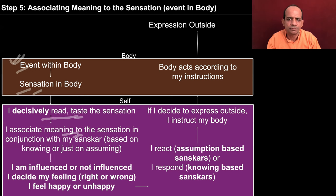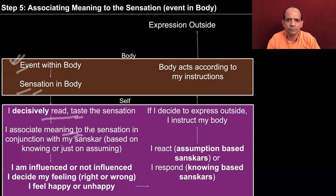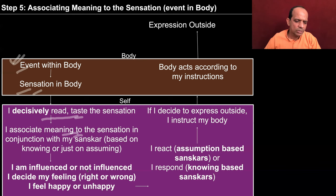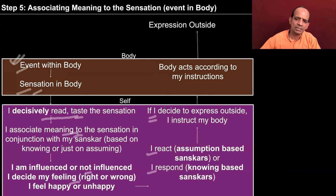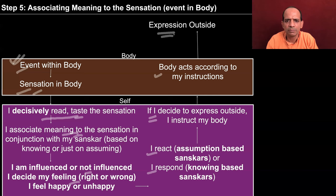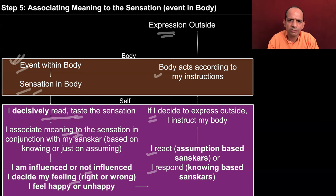Let us say on that very day you have a fast. Then even though the sensation is of hunger in the body, you decide not to go for the food — you are associating some meaning with the sensation. If you associate the meaning that today is a normal working day and you must have food by this time, that is one kind of meaning. If you feel that today is your fasting day and you should not have food at all, then you associate some other kind of meaning. Based on that, you get influenced or not influenced, you react or respond, and then you decide to express outside — instruct your body and the body acts accordingly. So you tell the family member that it is dinner time, or on a fasting day, you do not instruct the body to ask for food to be arranged.